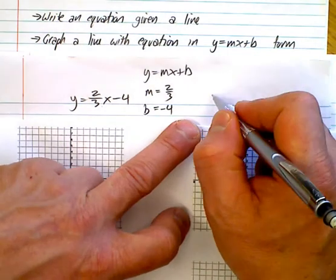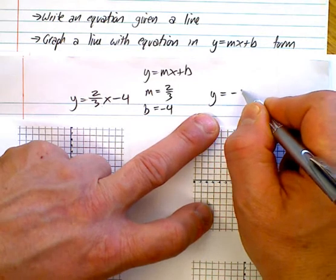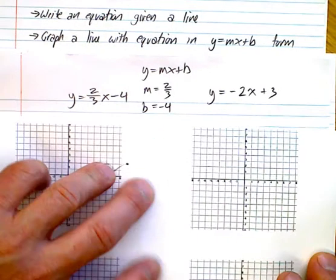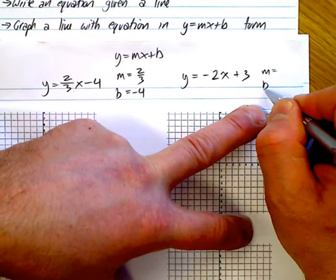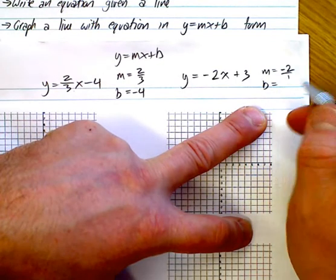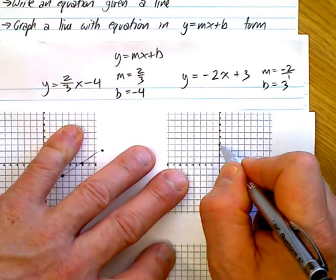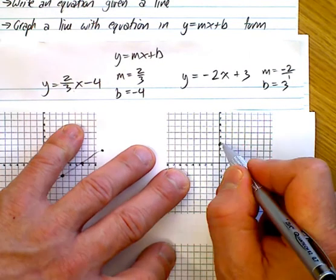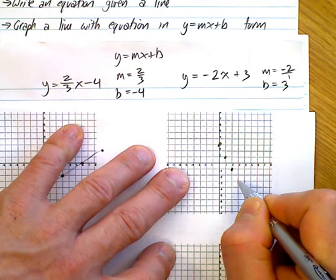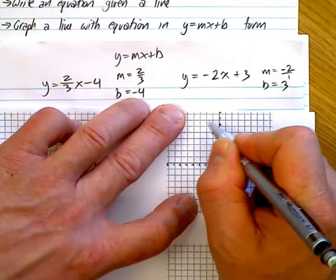Let's try another one. What if we have y equals negative 2x plus 3? Identify your m, which is negative 2 — put it over 1. Your b is 3. So we start at b, go up 3 — that's the y-intercept. With a slope of negative 2, I go down 2 over 1, down 2 over 1, down 2 over 1, keeping going until we get all the way across the graph.